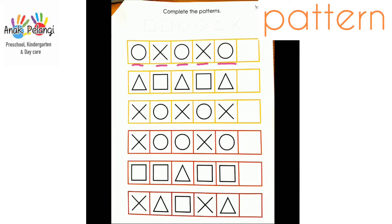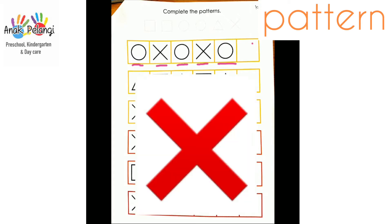There are two patterns: circle and cross. Circle, cross, circle, cross, circle. What comes next — is it circle or cross? Yes, you are correct. It's cross.